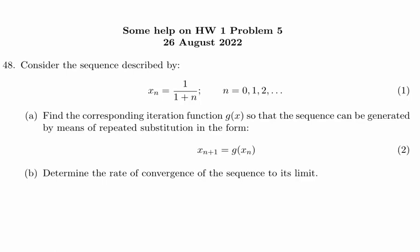In this video, I'm going to give you some help with problem number five on homework one. This problem asks you to consider a sequence described by x sub n equals 1 over 1 plus n, for n equal 0, 1, 2, and continuing through the integers.